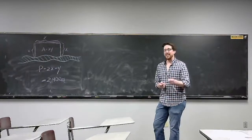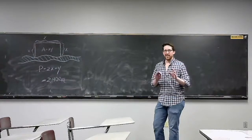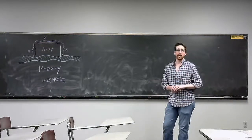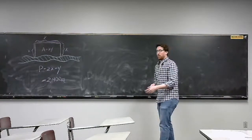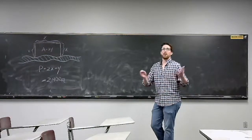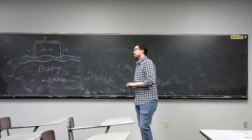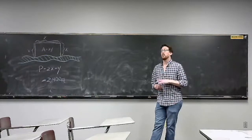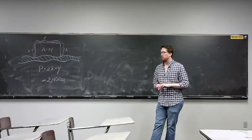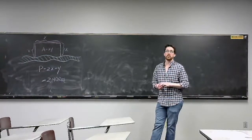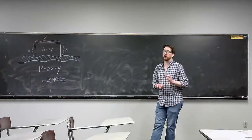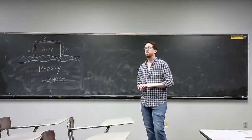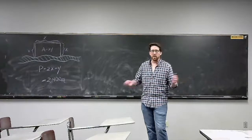This is going to be one of the most important sections in this class, because optimization gets used in literally every field. Industrial engineers might want to optimize a box — we actually have that problem in our notes. Computer scientists will encounter optimization in many problems. Engineers of all sorts will have to solve optimization problems throughout their careers, including in academia. Chemists use it too — optimizing mixing rates is a pretty common area. Biologists run into all sorts of optimization problems as well.